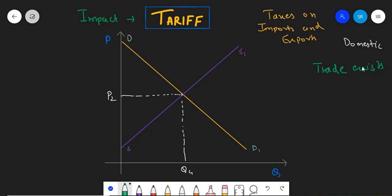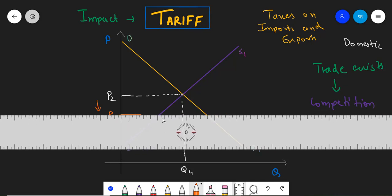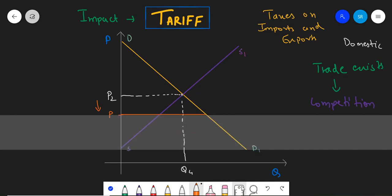As international trade leads to more competition between countries, the international prices of products are generally lower than the domestic prices. Let's say P are the international prices. Notice that the international demand curve is flat indicating perfect competition.